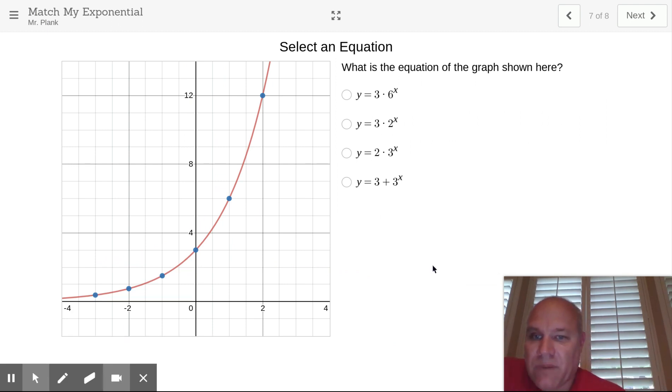Select an equation. Well, the first part, we should be able to figure out the a value real quick. The a value is 3 here. So that means this y equals 2 times 3 to the x is gone because that would be the y-intercept of 2. This one's a little bit trickier. This is scaled by halves. So this is actually 1. And so this is 6. So now we've got to think about this. 3 times what gets us 6? 2, right? So we want this to be 3 times 2 to the first power because 2 to the first power is 2. 2 times 3 will get us 6. So the correct answer on this one would have been this one here, b.